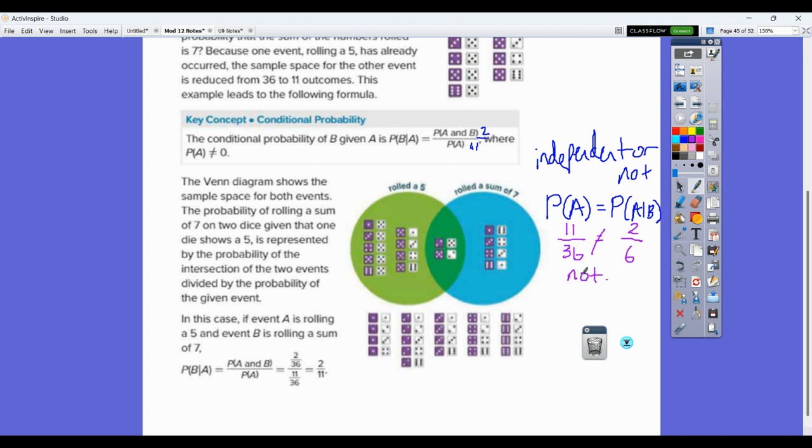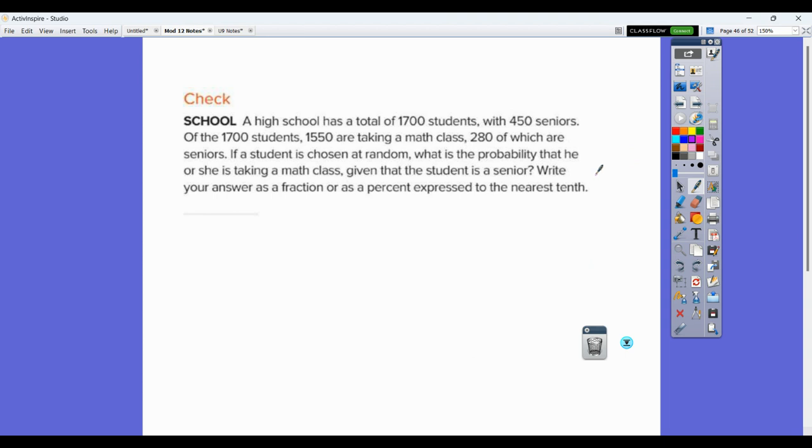Then they would be dependent on each other, which should make sense because if you know one, then it changes the probability of the other. So one example in here.